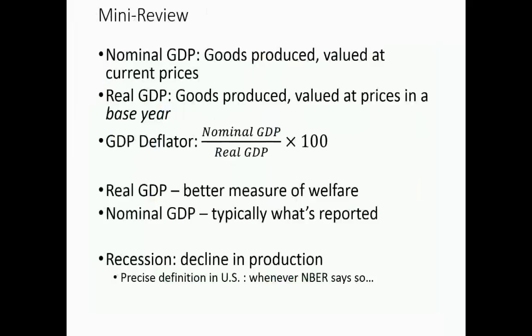Quick review: nominal GDP is goods produced valued at current prices; real GDP takes those same goods and values them at prices fixed in some base year. This lets you make comparisons of GDP across time. The GDP deflator is the ratio of nominal to real GDP multiplied by 100, so it equals 100 in the base year. It gives you a measure of how overall prices have changed. Real GDP is usually a better measure of welfare, but it's not always what's reported in the news. A recession is roughly a decline in production, though the exact definition depends on where you are.